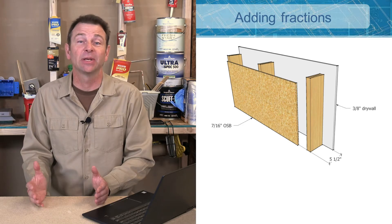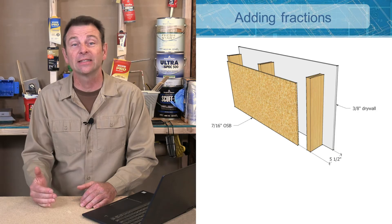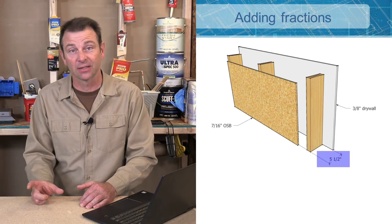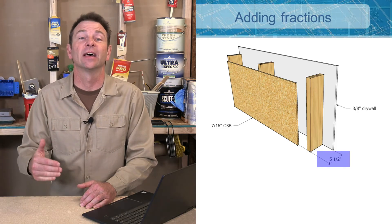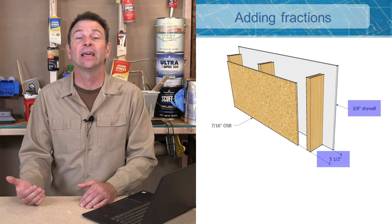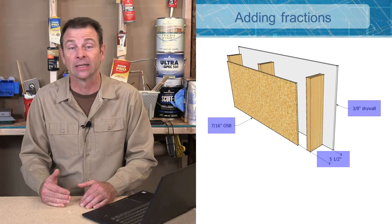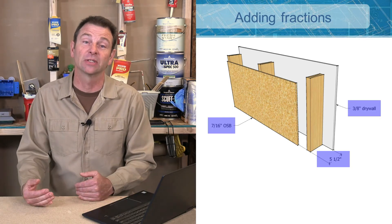It's being assembled from three different materials. You've got studs that are going to be 5½ inches wide, you have a drywall that's added on that's a 3/8 thick drywall, and then for this exterior wall you're going to have 7/16 OSB on the outside.